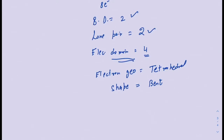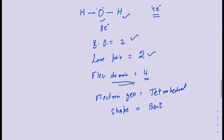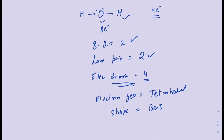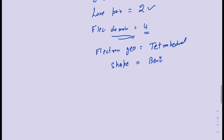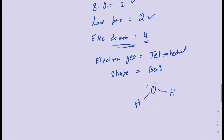So for water, the electron geometry is tetrahedral but the molecular geometry or shape is bent. If you initially drew the Lewis structure as linear, go back and redraw it showing the bent shape — that is how the water molecule actually looks. This is how you use Lewis structures together with VSEPR theory to figure out the geometry of molecules. More examples will be in another video.